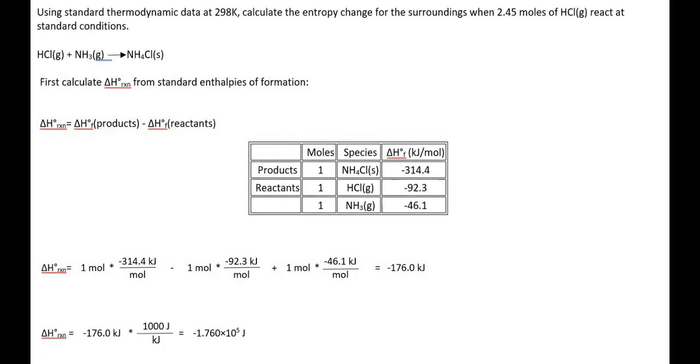Here is a similar problem where we're asked to calculate the entropy change for the surroundings. The reaction is between HCl gas and ammonia gas to produce ammonium chloride solid. Like before, let's calculate delta H reaction using the equation delta H formation products minus delta H formation reactants.